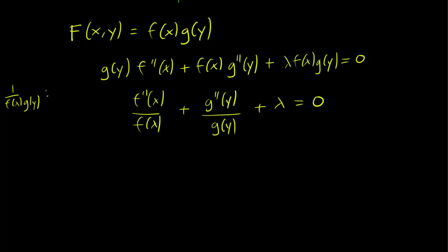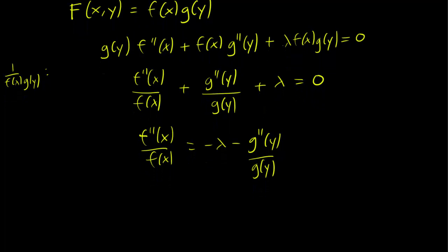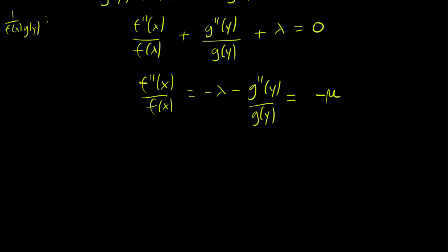Let's move all the g(y) terms to the right and put lambda there with it. So we get f''(x)/f(x) equals minus lambda minus g''(y)/g(y). So here's the thing, we again have a situation where the left-hand side just has x terms and the right-hand side just has y terms. So the left side is independent of y, and the right side is independent of x. So it must be true that both sides don't depend on either x or y. So this is a constant, and let's call that constant minus mu. Again, the sign is there for a good reason, just to make things a bit more standard.